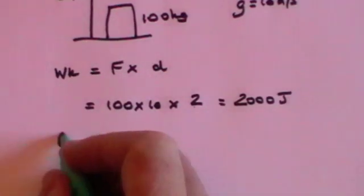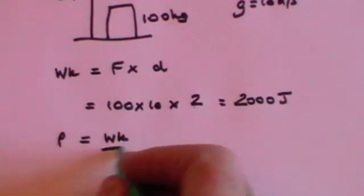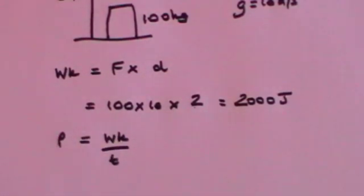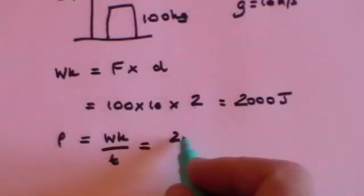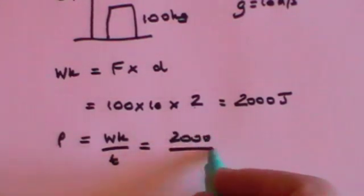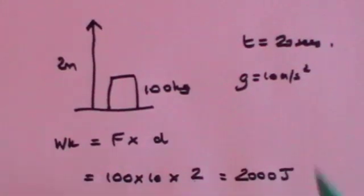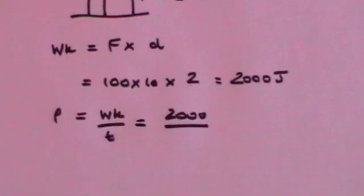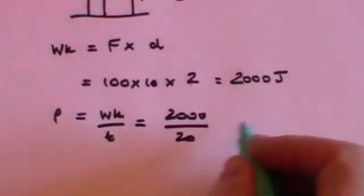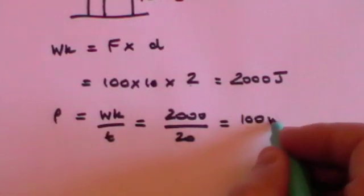What is the power? Power is work over time, or energy over time, and that's going to be 2,000 joules divided by the time it takes. The time was 20 seconds, so that's 2,000 divided by 20, and that's going to be 100 watts.